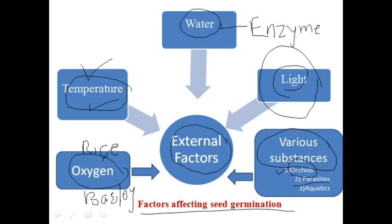Another example is for the parasites, like Orobanche or Striga — they are stimulated to germinate by maize roots. This is because these angiospermic root parasites germinate only in the vicinity of the roots of their reproductive host. Certain substances present in the host root diffuse out and further stimulate germination of the seeds of the parasite. Orobanche as well as Striga are the best examples for it.